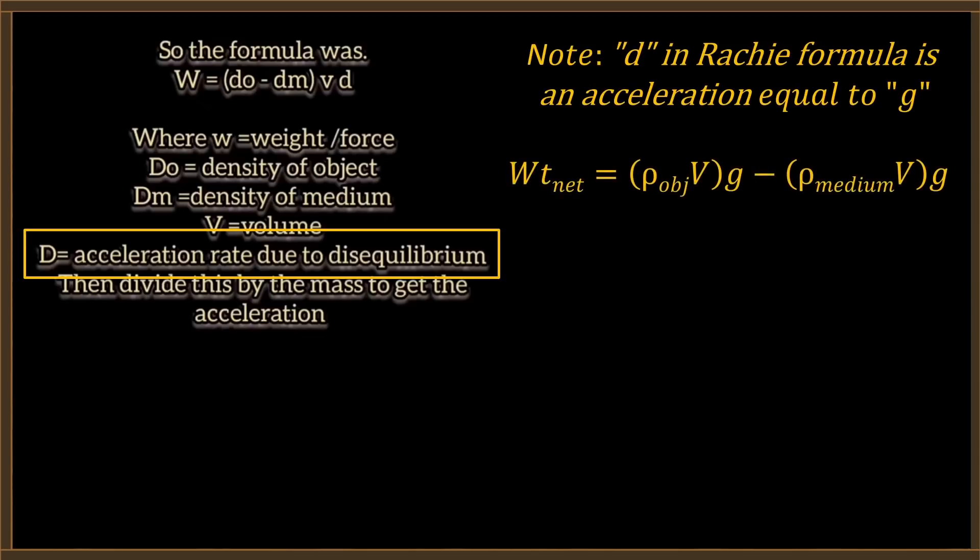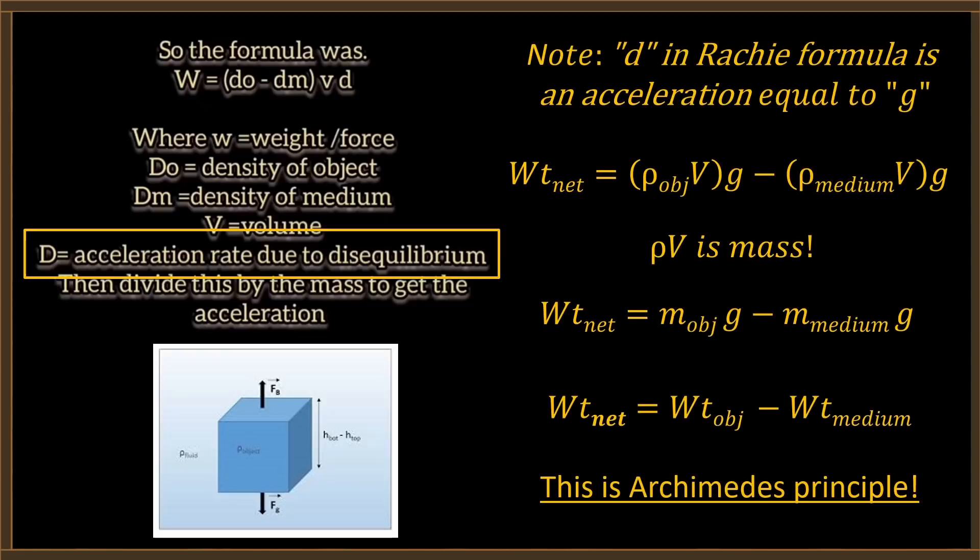We do know one thing. We know it's exactly the same as little g according to your description. So let's check out your formula. What you've said is that the density of an object times its volume times the acceleration of gravity minus the density of the medium it's in times the volume of that medium the object is displacing multiplied by the acceleration of gravity will give us net weight. Okay, no problem with that. Remember that density times volume is actually mass. So what you're saying is net weight is equal to the mass of the object times acceleration of gravity minus the mass of the medium that the object is displacing times the acceleration of gravity. In other words, net weight is the weight of the object minus the weight of the medium it displaces. Richie, this is Archimedes' principle. We've known about this for the better part of 2300 years now. This is exactly how this works. What you haven't done is tell us what causes this acceleration rate due to disequilibrium.